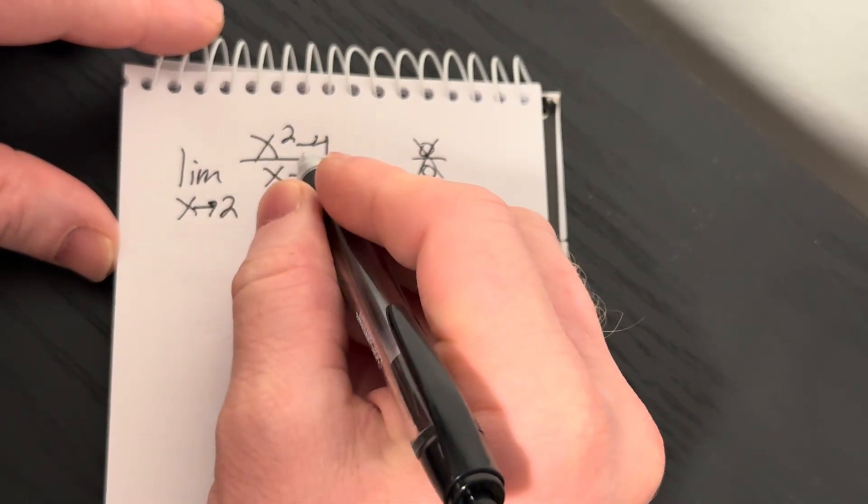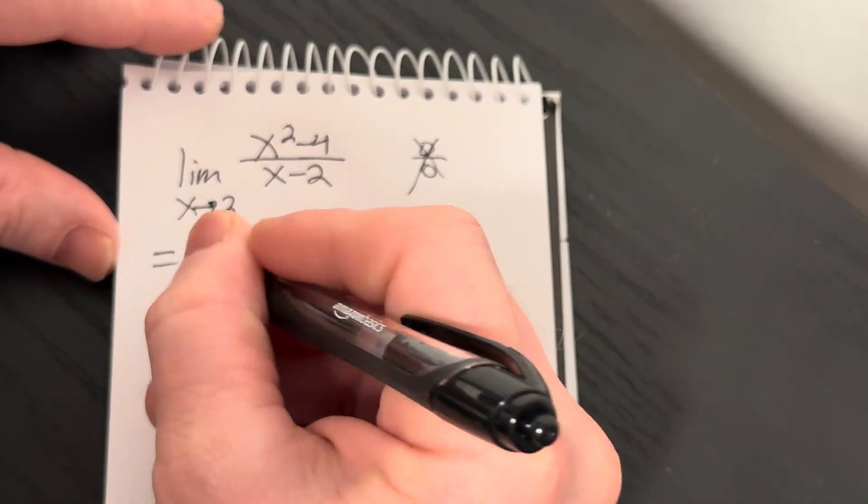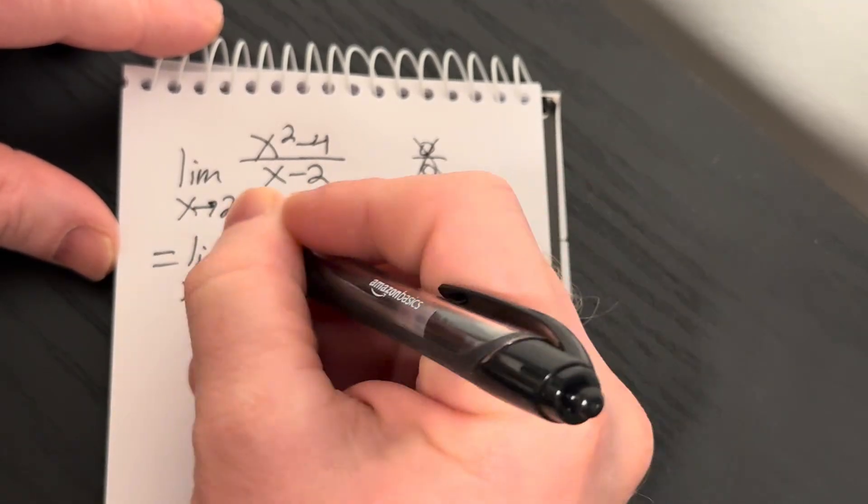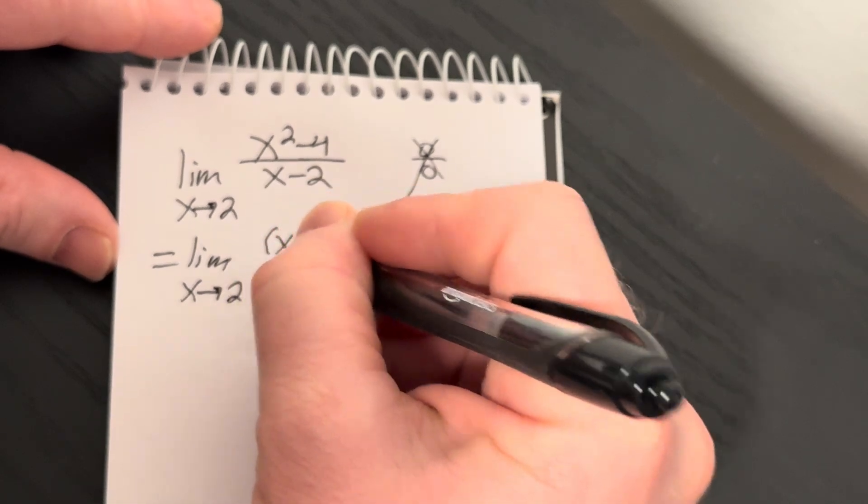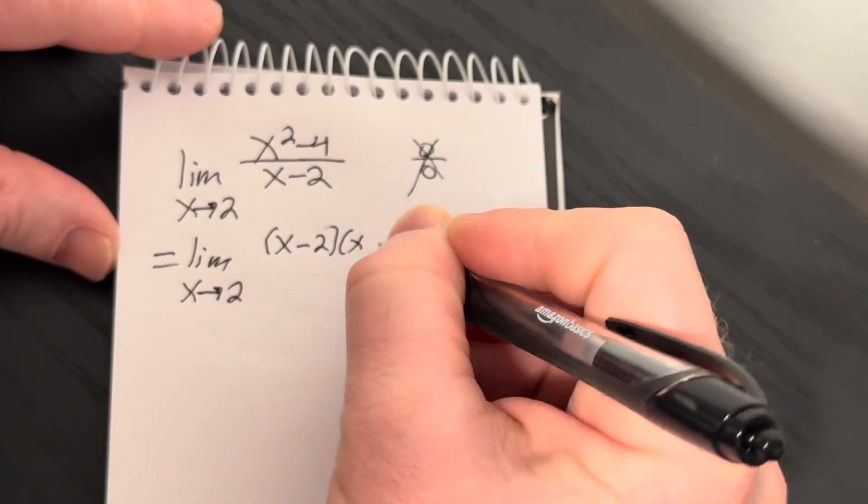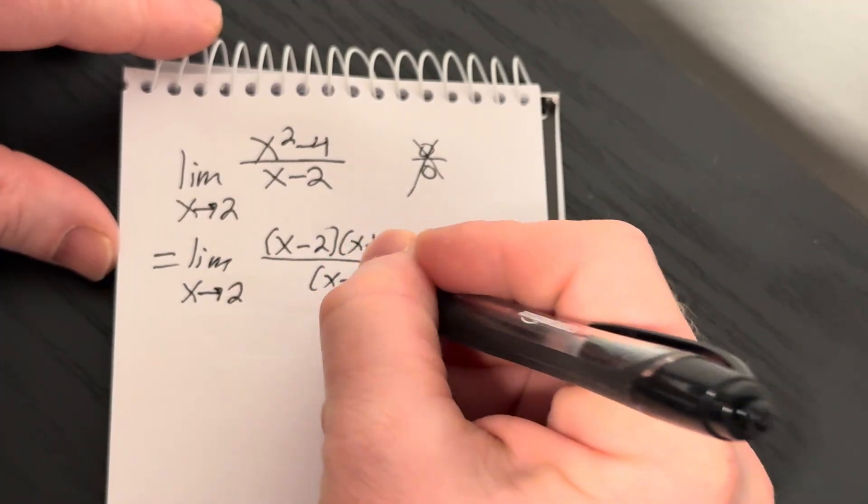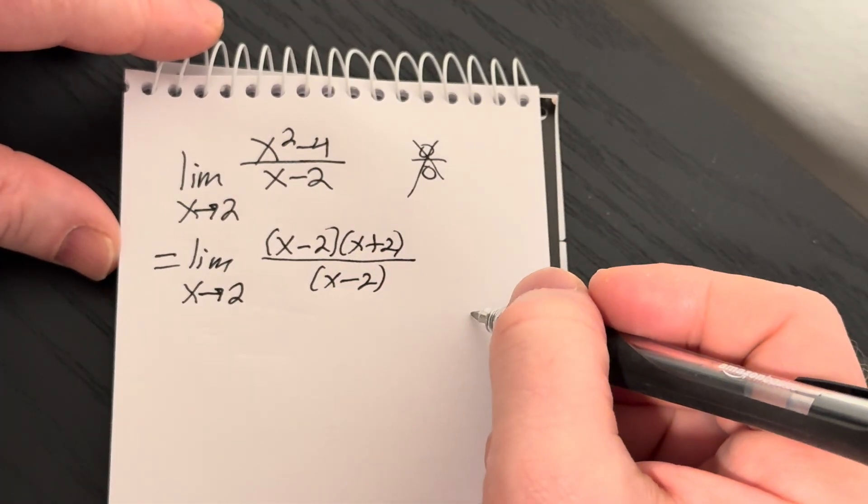So what we're going to try to do is factor the numerator, so this is equal to the limit as x approaches 2. Notice we still write the limit sign. The numerator is the difference of squares, so it'll be x minus 2 times x plus 2 over x minus 2 on the bottom.